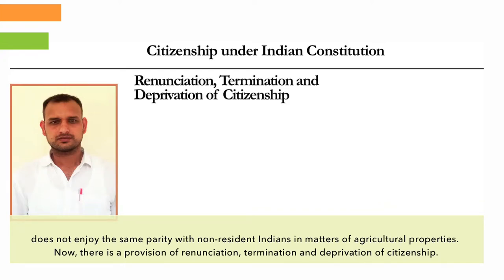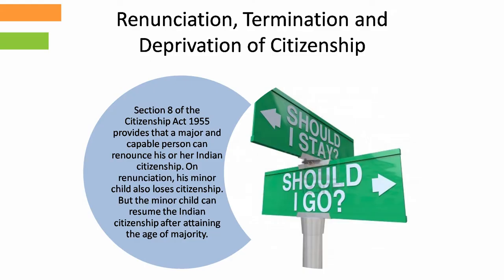There is a provision of renunciation, termination and deprivation of citizenship. Section 8 of the Citizenship Act 1955 provides that a major and capable person can renounce his or her Indian citizenship. On renunciation, his minor child also loses citizenship, but the minor child can resume Indian citizenship after attaining the age of majority.